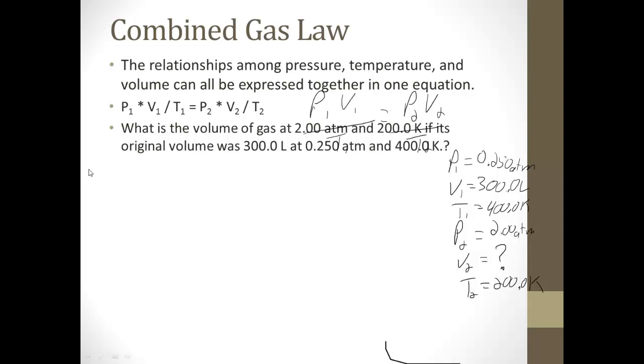So we have P1V1 over T1 equals P2V2 over T2, and we are solving for V2. So if we multiply this side by T2 over P2, and we multiply this side by T2 over P2, T2's cancel, P2's cancel. We end up with V2, which is what we need. V2 equals T2 P1 V1 over P2 T1.